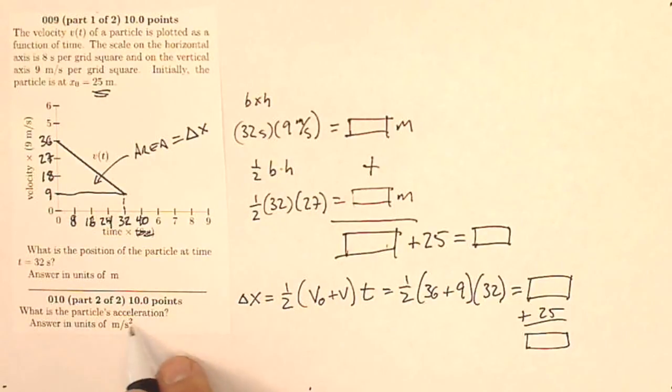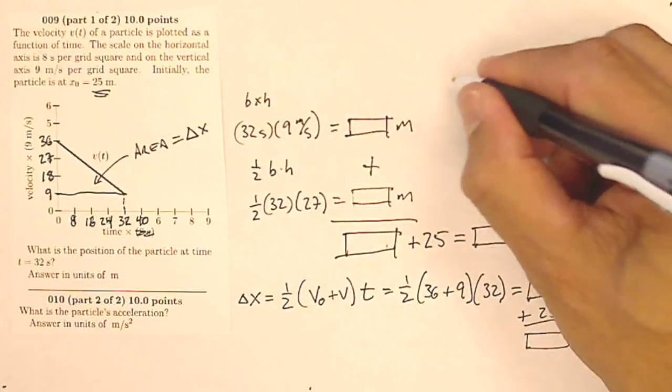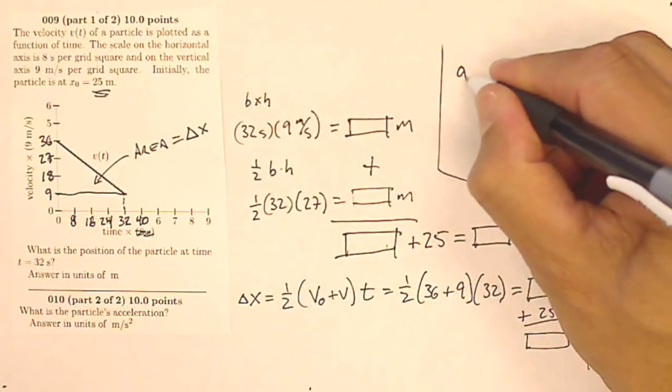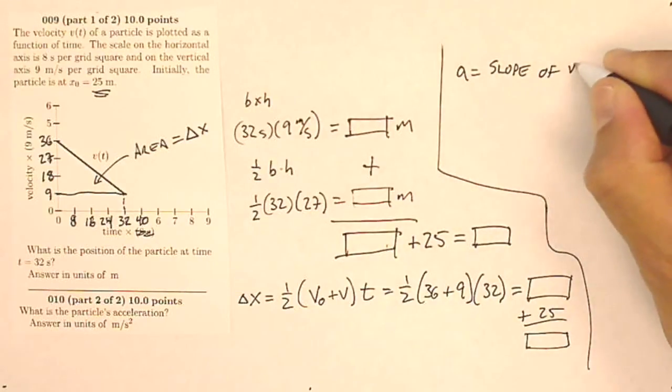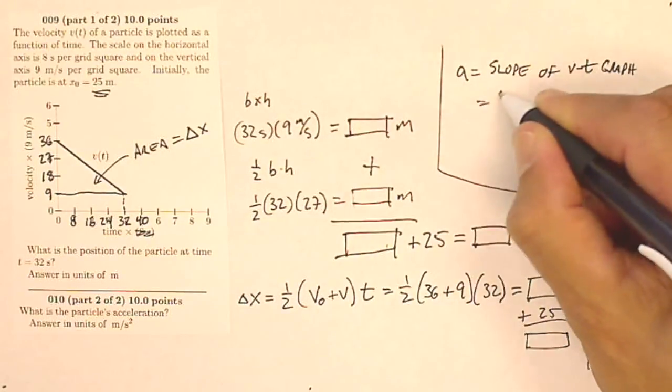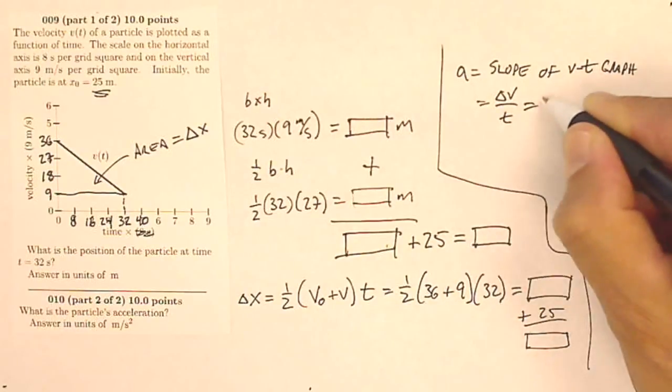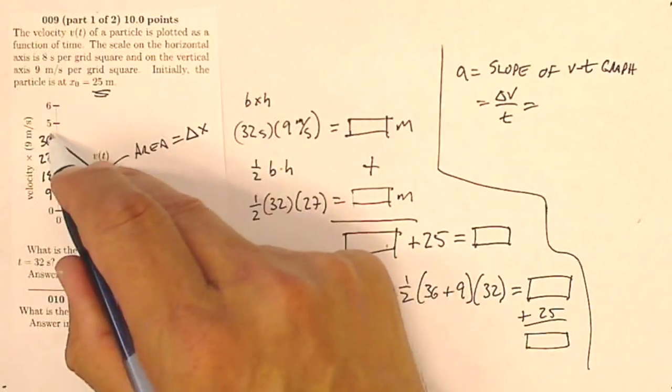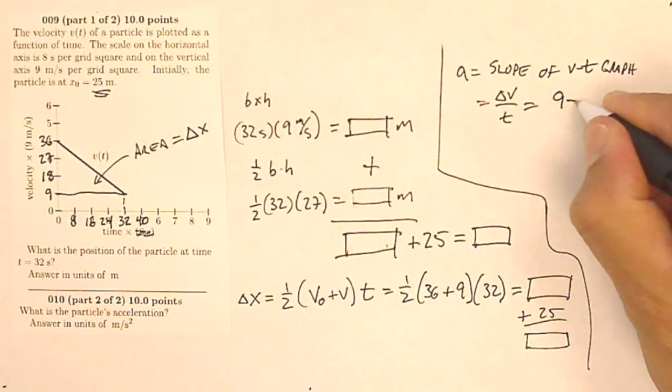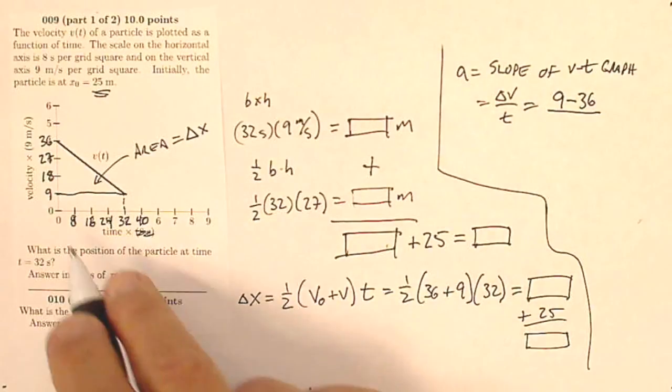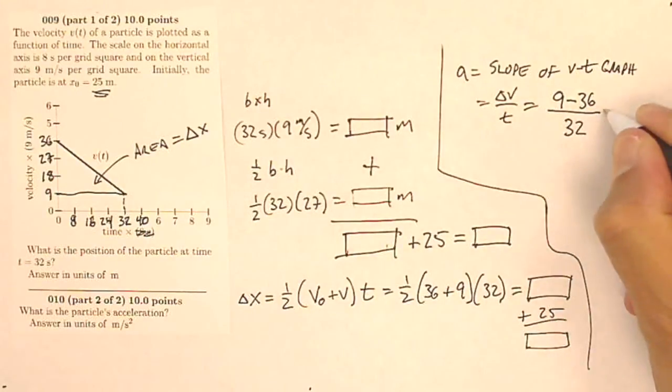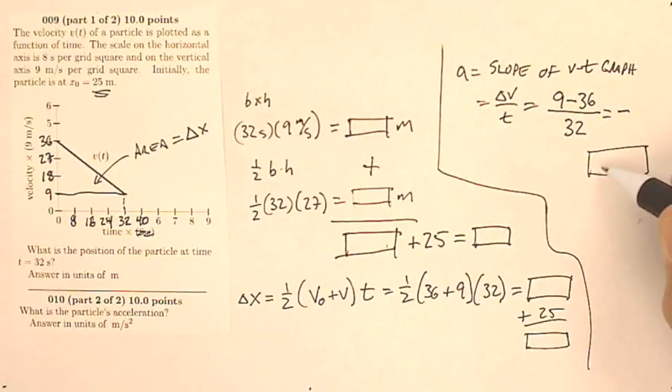Question 10 asks, what is the particle's acceleration? Well, I know that my acceleration, let me separate this, my acceleration is the slope of the VT graph. And if it's the slope, then it's going to be rise over run. So it's going to be my change in velocity over time. Well, my change in velocity is going to be my final velocity minus my initial velocity. So that's going to be 9 minus 36. Notice that's going to be a negative number because it's downward sloping. Divided by the amount of time is 32 seconds. So I'm going to get some negative acceleration out of this. And that will be my answer. It's going to be negative something or other.